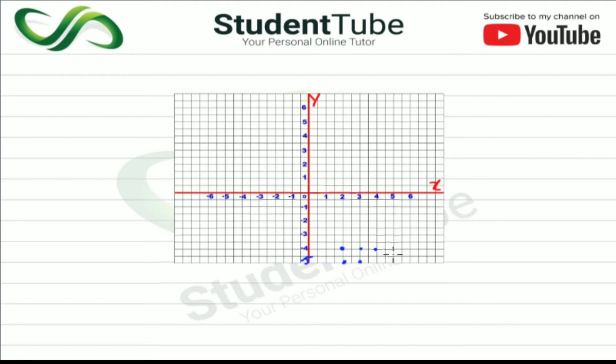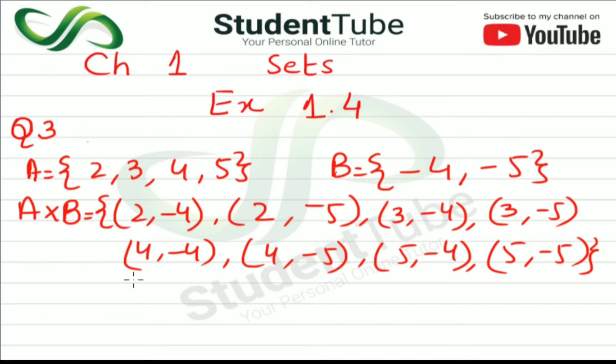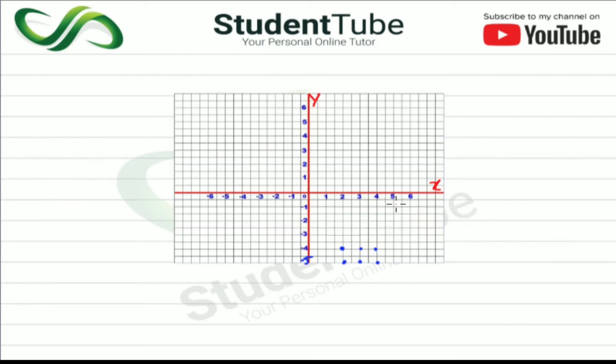This is 4 coming down to -5. This was 4 and -5. This is 5 and -4, and then 5 and -5. So this is the 8-pair which came in our answer. You can write the pairs with it. I hope that today's question will be understood very well.